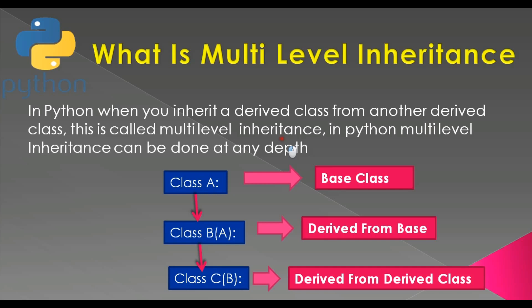Multi-level inheritance can be done at any depth. For example, we have a class A as our base class, then class B which inherits from class A, and also class C which inherits from class B — so you can use multi-level inheritance at any depth.